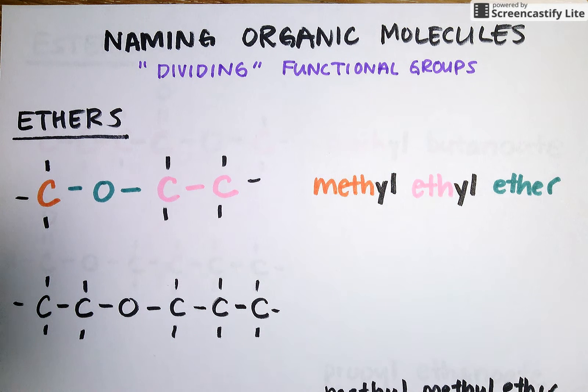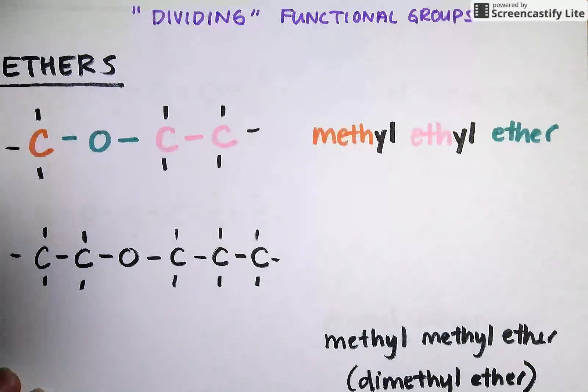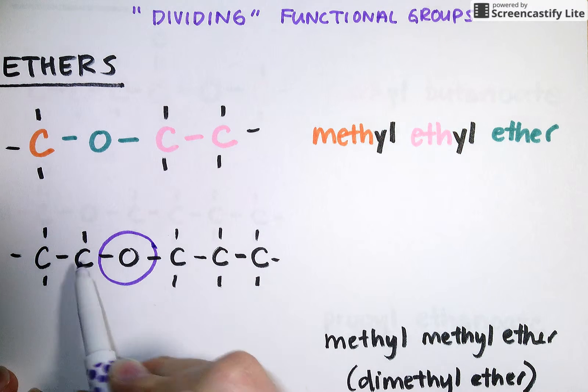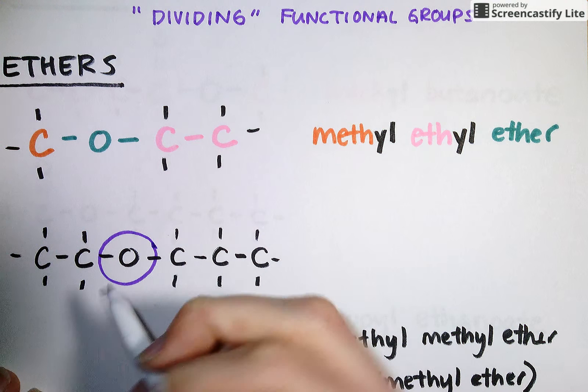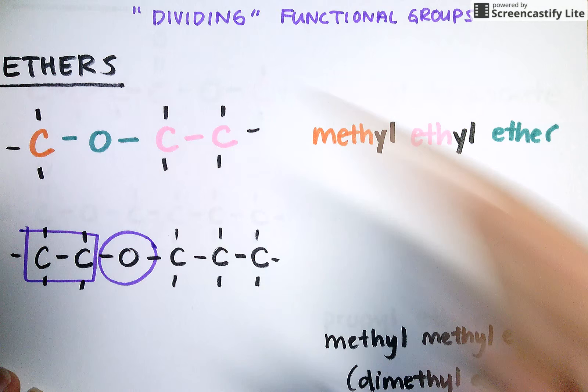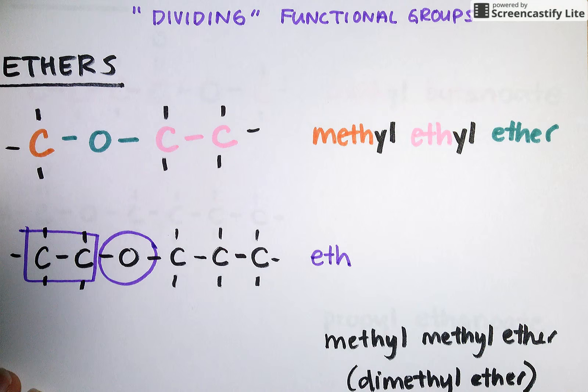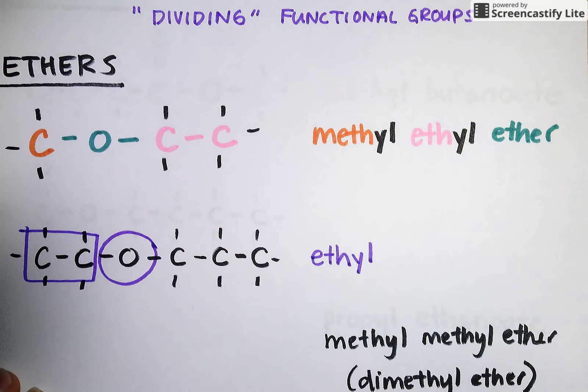Let's use that same logic to name this particular molecule shown here on the left. I see that it must be an ether because I've got my O with two side chains to the left and right. On the left, I've got a two-carbon chain. So I'm going to name that eth for two carbons with a yl ending to denote that it's a side chain.